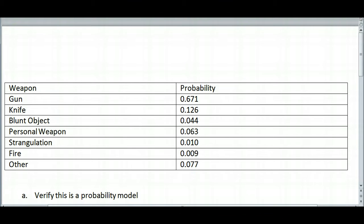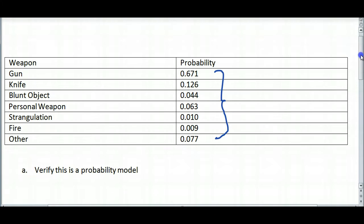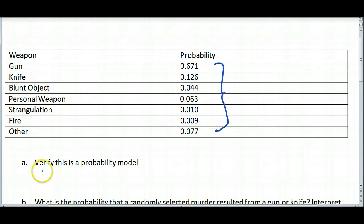And the second condition is that all of the probabilities must be between 0 and 1. So I can have no negative probabilities and no numbers greater than 1. So if you notice here, there are no negatives and there are no probabilities greater than 1. So yes, this is a probability model. And we do want to explain why: all of the possible probabilities sum to 1 and all of the probabilities are between 0 and 1. That's good.